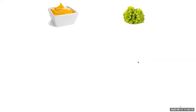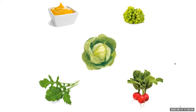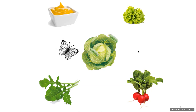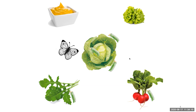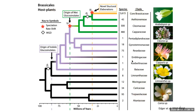Glucosinolates, or mustard oils, are considered a key innovation of the Brassicales and especially the Brassicaceae. These are what we know as yellow mustard and wasabi, but also make up the taste profile of many common crop vegetables. They're also important for insects — this co-evolution has been a classic model for how these plants escalate their glucosinolate compounds. There are over 170 different types of glucosinolates.